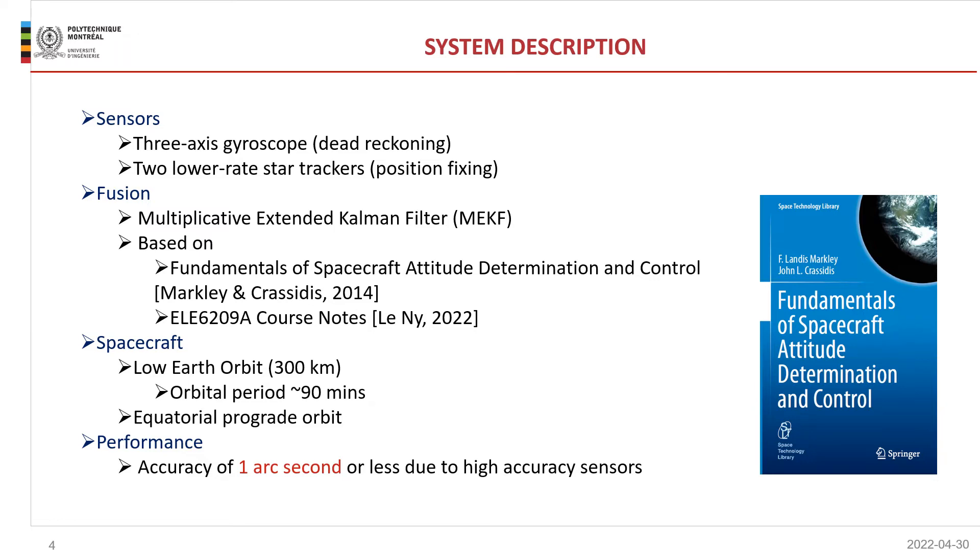The satellite is in low Earth orbit, 300 kilometers of altitude. Its orbital period is 90 minutes, so that's going to be our simulation time. We're going to perform simulations for one orbit. We've selected an equatorial prograde orbit. We're going to discuss in a minute what that means. More importantly, we expect the system to be accurate up to one arc second. That's mainly due to the high accuracy sensors that have been selected and that we're going to discuss in a minute as well.